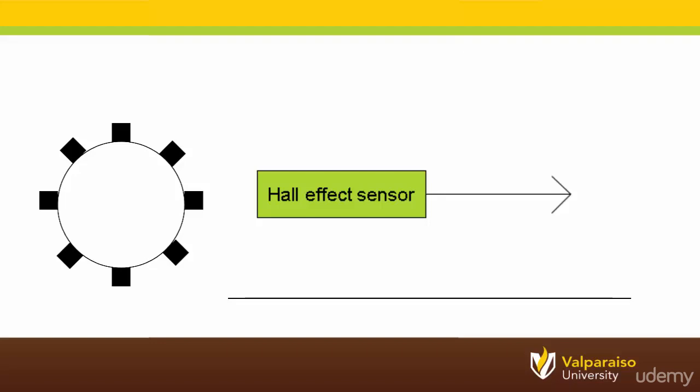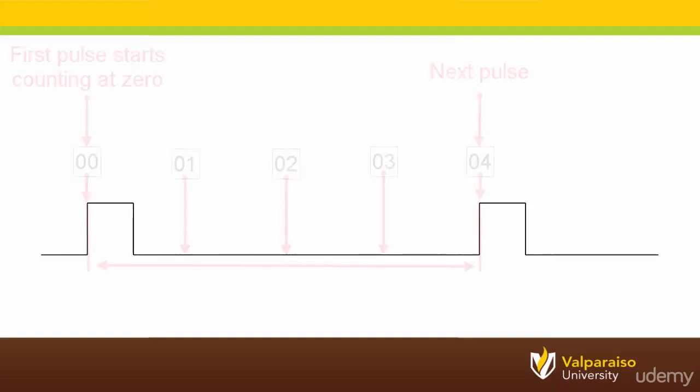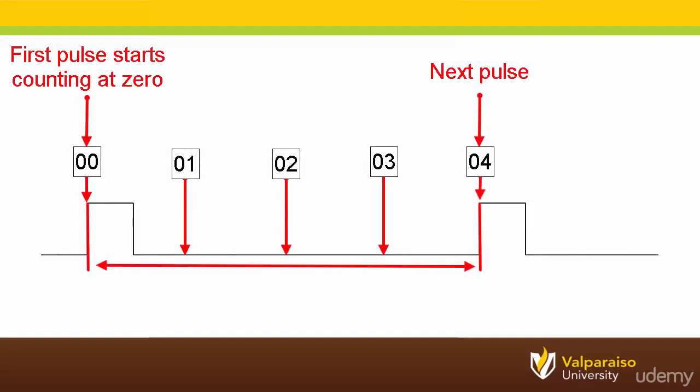So how does the timer actually make the antilock brakes work? It counts the time between the events, between the pulses coming out of the Hall Effect Sensor. If the time between the pulses is short, the timer knows that the car is going fast. The time between the pulses is long, the timer knows the car is going slow.